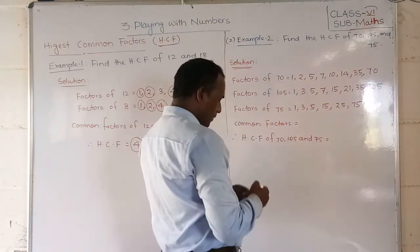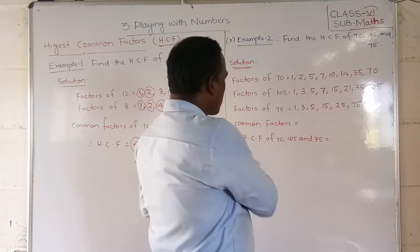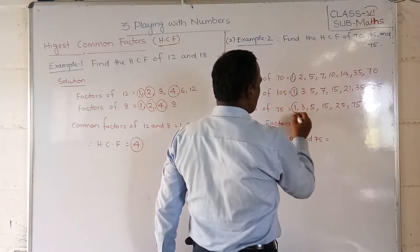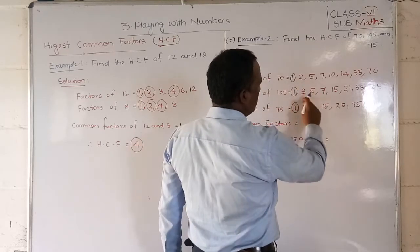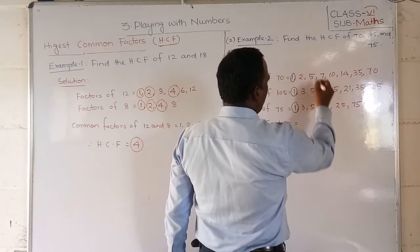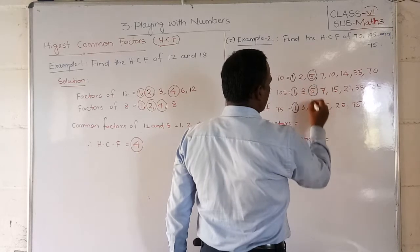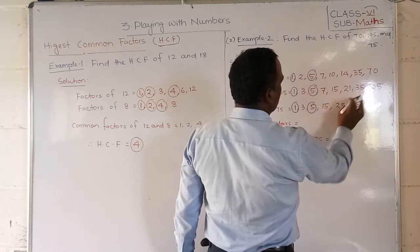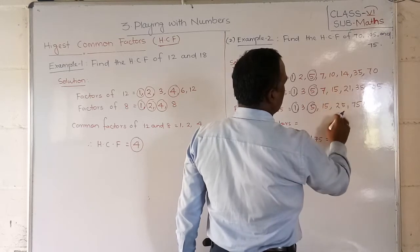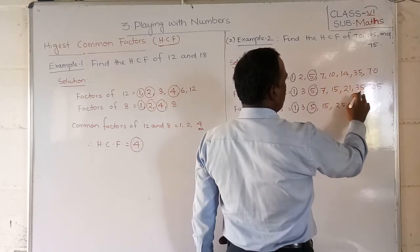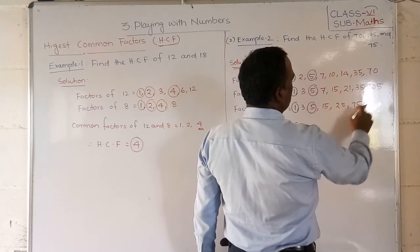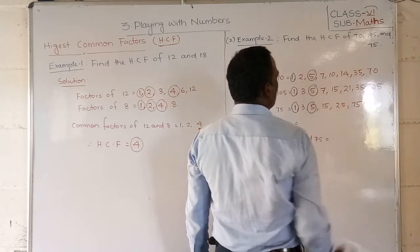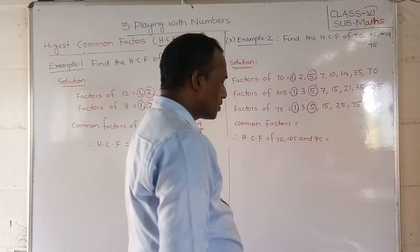Now I have written all the factors. Now we mark the common factors. So what are the common factors now? 1, 1, 1. Here 2 is there, here 2 is not there. Next 5, 5, 5 is there. Next 7, 7 here but 7 is not there. 10, here 10 is not there. 14 is not there. 35 is not there. 70 is not there.